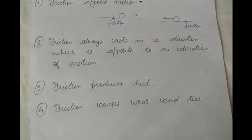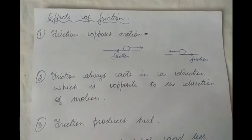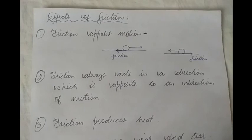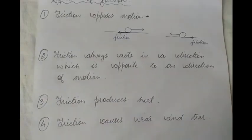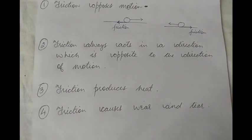So, these are the four effects of friction for Class 6: friction opposes motion; friction always acts in a direction opposite to the direction of motion; friction produces heat; and friction causes wear and tear.